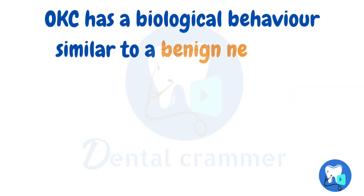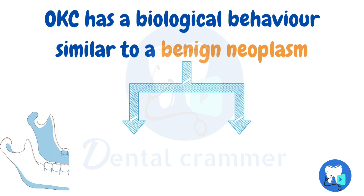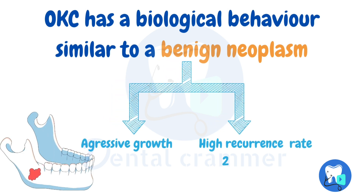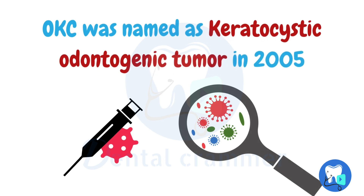OKC has a biological behaviour which is quite similar to a benign neoplasm due to its aggressive growth and high recurrence rate of 25-60%. Due to its aggressive growth, OKC grows rapidly to involve the cortices of the bone. Because of its similarity with a neoplasm, OKC was named as keratocystic odontogenic tumour.